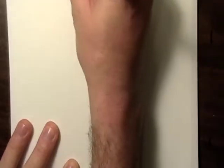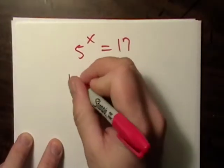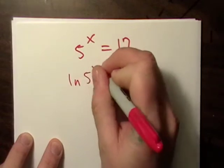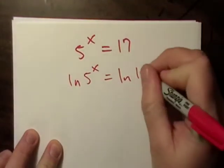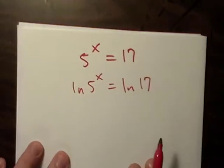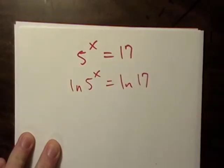Let's do another one just like it. Let's go 5 to the x equals 17. Well, let's just do the same thing. Let's take the natural log of both sides. You could have took the regular log of both sides if you really want to. It doesn't really matter.